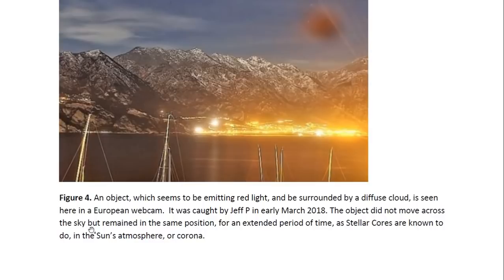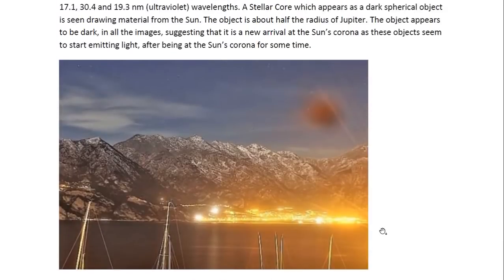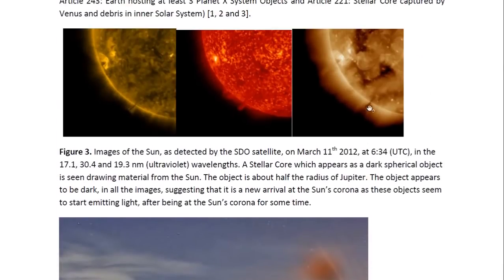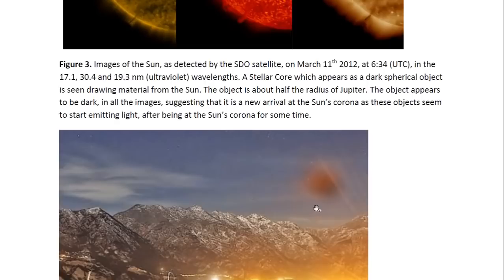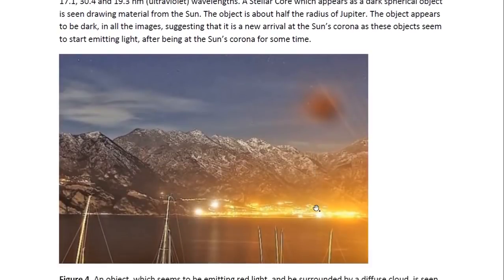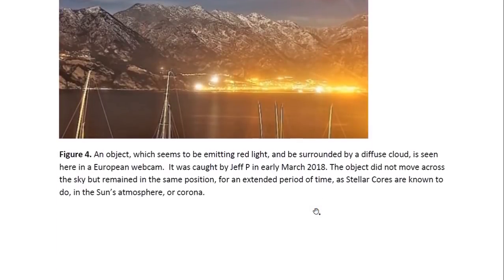This one was captured by GFP in March of 2018 in a European webcam. This object did not move across the sky, but remained in the same position for an extended period of time. It was thus moving with the Earth as if it was part of the Earth. And as the stellar cores in the sun's corona also do the same thing by making this connection, they make themselves part of the sun and thus rotate with the sun. The stellar cores that are interacting with the Earth seem to be doing the same thing with respect to the Earth.